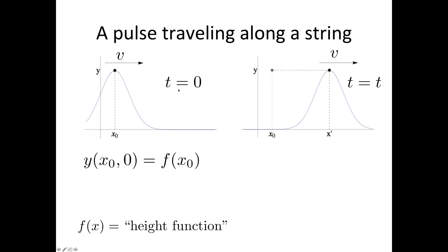So this is the pulse at some time t equals zero. What we've written down here is that y—we're looking at what the value of y is at x equals x₀, so that's this value of x₀ here.